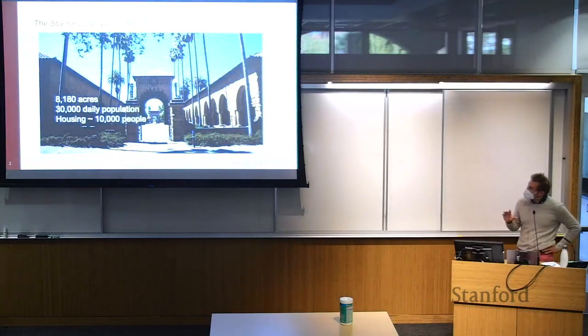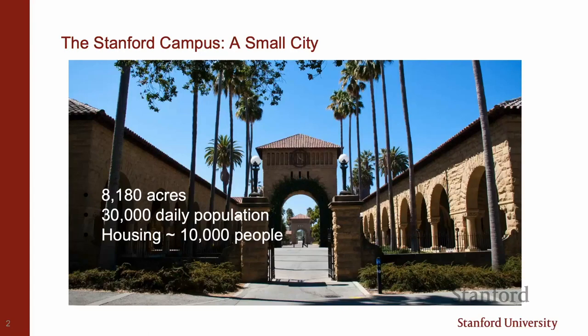The Stanford campus is really a small city. The daily population is partly people coming in. The number of 30,000 is based on electricity consumption of the campus as a whole, which is roughly equivalent to a 30,000-people city in California. There are different reasons why people are on this campus — some people live, work, do research, and teach here.